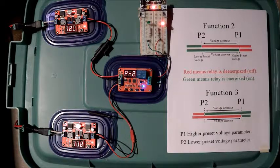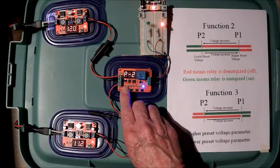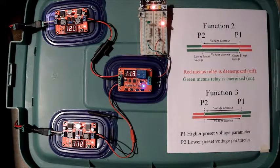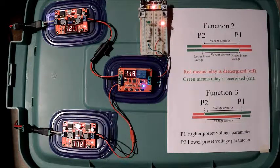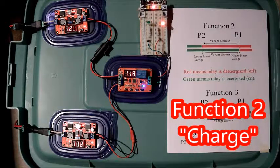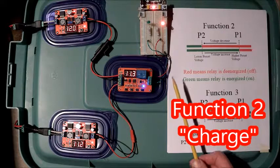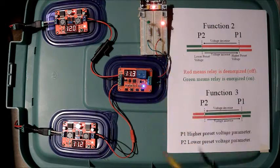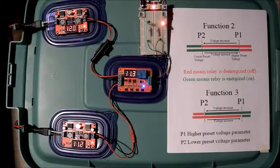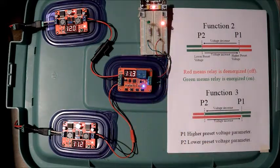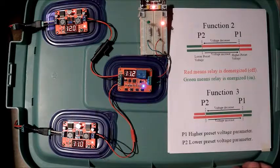Once I have the parameters set, I'll hit the set button for a long period, over a second, and it'll go into the operational mode. We are implementing Function 2. Function 2 is called the charge function. If you had a charger hooked to the relay contacts rather than my LEDs, the charger would be turned on and off, depending on the status of the relay. I will now demonstrate Function 2.